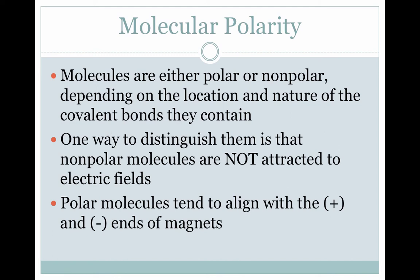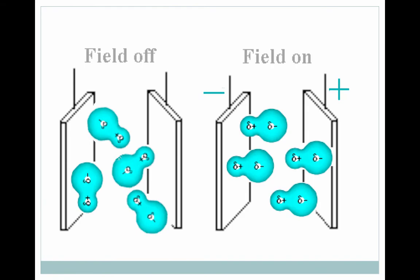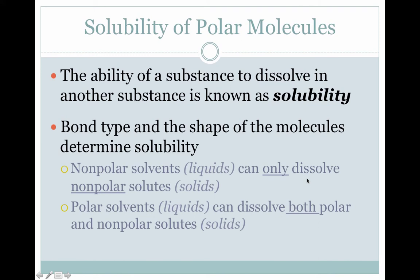Molecules are either polar or nonpolar depending on the location and nature of the bonds. One way to figure out whether something's polar is to use an electric field, like magnets. If it's polar and has a positive or negative end, it should align. When the magnets are not turned on, the molecules are all just jumbled. But when you turn on the magnets, they arrange perfectly — with one side pointed to the positive and one side pointed to the negative. The negative magnet attracts the positive end, and the positive magnet attracts the negative end.